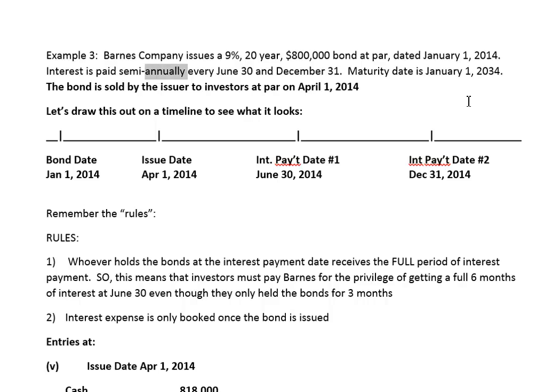Interest is paid semi-annually — twice a year — once June 30th, once December 31st, and it matures in 20 years, which means the bond term ends at January 1, 2034.